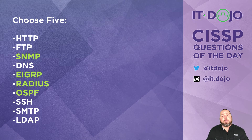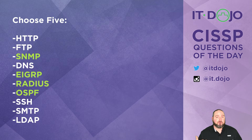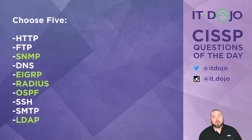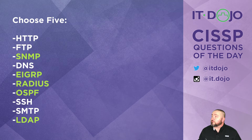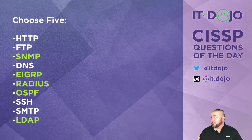The final player is LDAP — the Lightweight Directory Access Protocol. LDAP is not a protocol you typically allow to go out to the internet; he's kind of a stay-in-the-house kind of guy. So the full list of correct answers is: SNMP, EIGRP, RADIUS, OSPF, and LDAP — those are the ones we typically do not allow to go out to the internet.